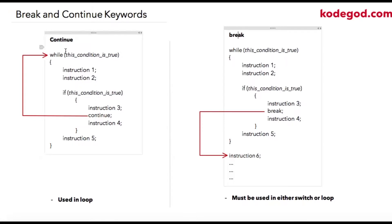So let us take an example for the continue keyword. Continue keyword must be used within a loop. I am taking a while loop over here. Until this while condition is true, we are sure that instruction 1 and 2 will always be executed. I am adding a condition here, so if this condition is true, instruction 3 will be executed.